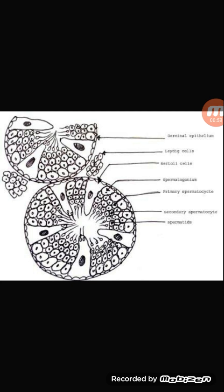Each testis is divided into 200 to 300 lobules. Imagine an egg partitioned into 200 to 300 lobules, with the point of origin on the posterior side — all triangles joining with their apex meeting at the posterior side. Each lobule consists of 1 to 4 convoluted seminiferous tubules. These are tube-like structures that are slightly zigzag in nature. If we cut this tube, what we get is a circle, which is what the diagram represents.